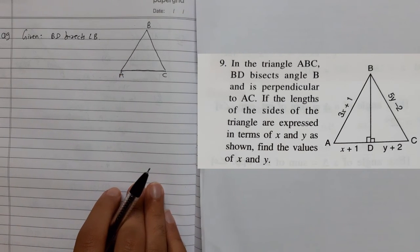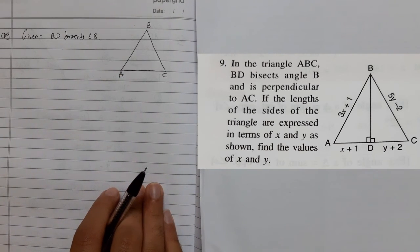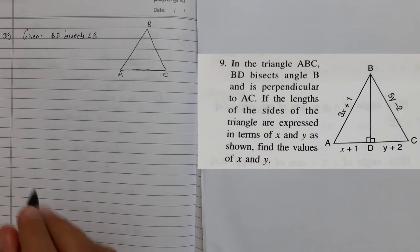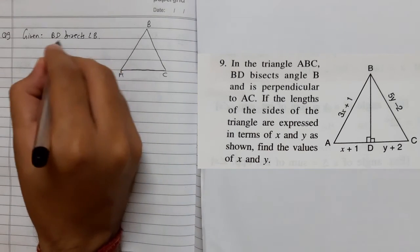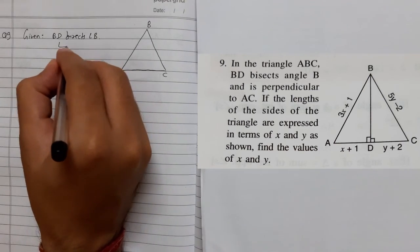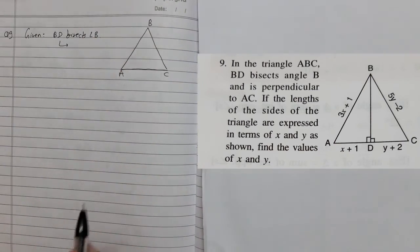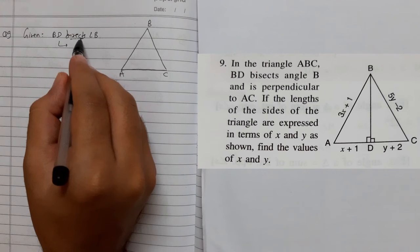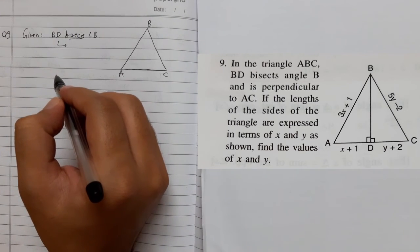If you are a follower of the previous videos, you will be able to analyze that we cannot write in a statement form when we are proving or solving mathematical questions. We should write in a mathematical form. How to write in mathematical form? Bisect means dividing a thing into two equal parts.